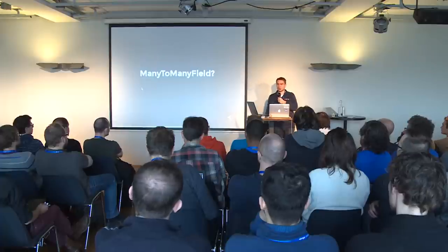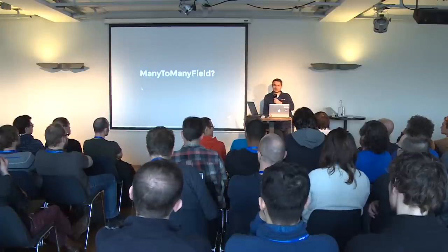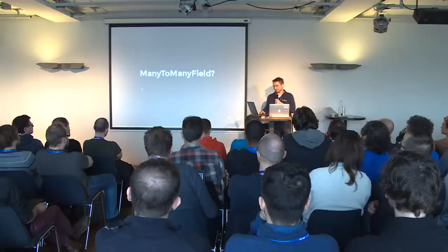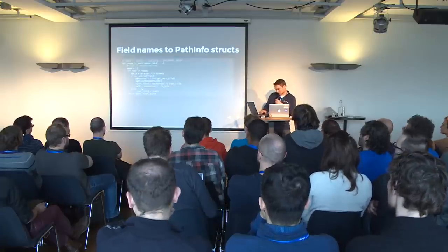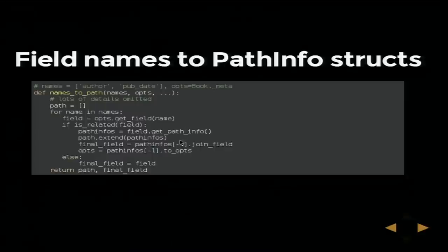How does the many-to-many field work? It actually just returns two path infos. For the ORM, it's nothing more than two foreign keys. We don't have to care about how many-to-many is implemented — for the ORM it's just two foreign keys. The `get_path_info` can return many path infos, so you can have five joins for one relation if you want.